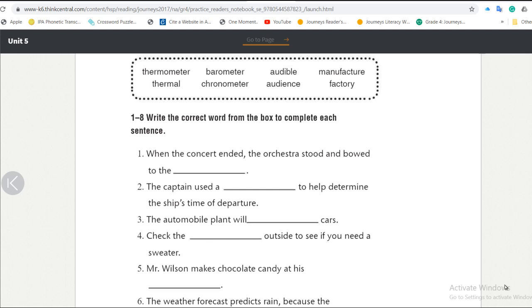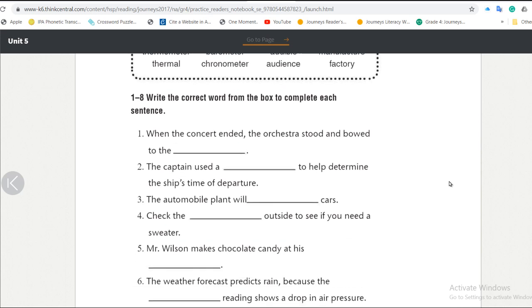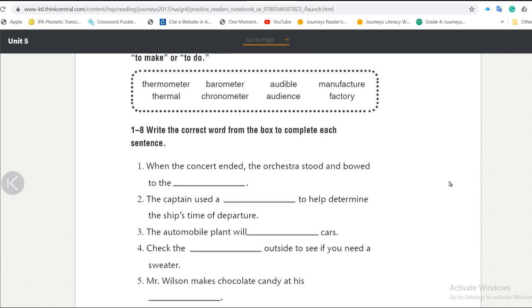Number three, the automobile plant will... cars. Will produce cars. Will make cars. Will have cars. What did we say about the part fact? Means to do or to make. So maybe it's manufacture. The automobile plant will manufacture cars. That's amazing.